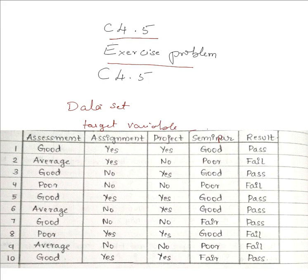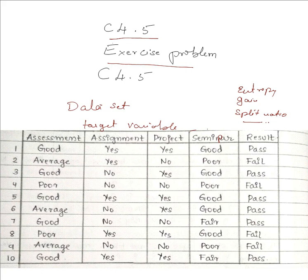In C4.5, the first step is to calculate the entropy, then we have to calculate the gain, and then the additional thing is the split ratio. The split ratio is not present in ID3, but here in C4.5 we have to compute it. Split ratio is equal to entropy divided by gain. Whichever node has the maximum split ratio will be chosen as the root node for further pruning.